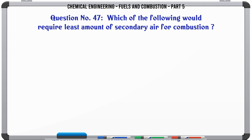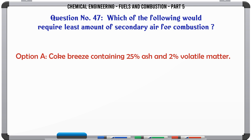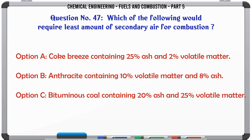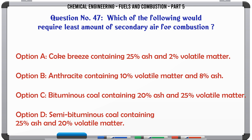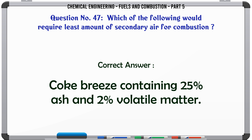Which of the following would require the least amount of secondary air for combustion? A. Coke breeze containing 25% ash and 2% volatile matter. B. Anthracite containing 10% volatile matter and 8% ash. C. Bituminous coal containing 20% ash and 25% volatile matter. D. Semi-bituminous coal containing 25% ash and 20% volatile matter. The correct answer is coke breeze containing 25% ash and 2% volatile matter.